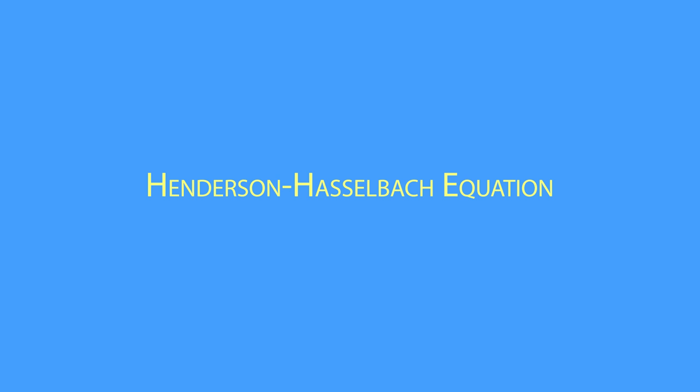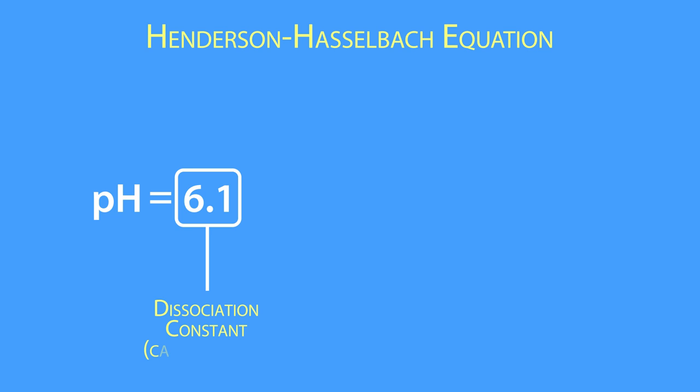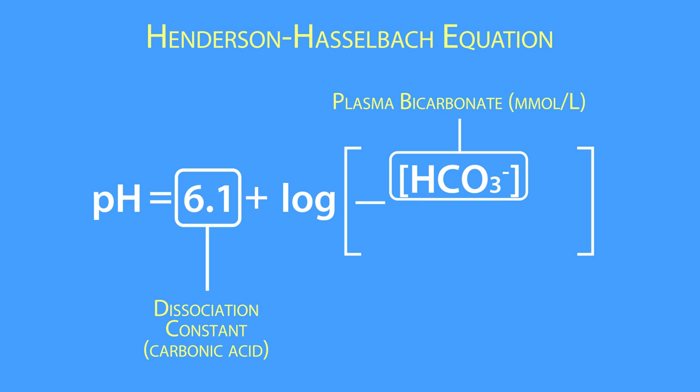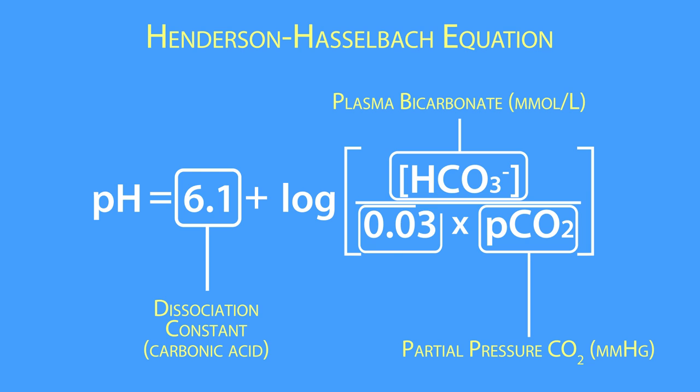The Henderson-Hasselbalch equation is routinely used to measure plasma pH. It states that plasma pH equals 6.1, which is the dissociation constant of carbonic acid, plus the log of the plasma bicarbonate concentration divided by the partial pressure of arterial carbon dioxide times its solubility in blood, which is 0.03.